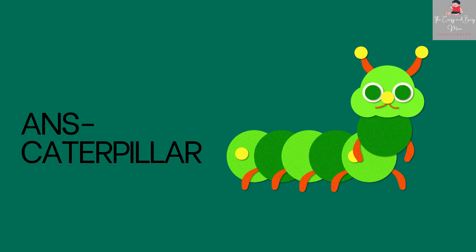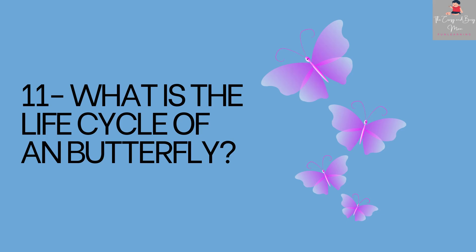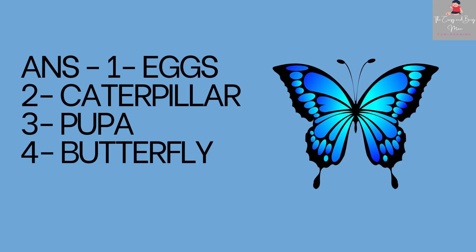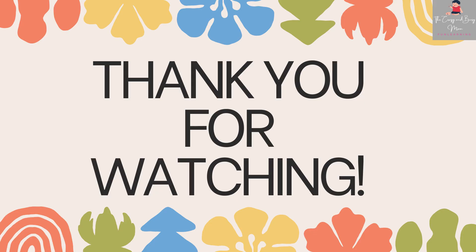What is the life cycle of a butterfly? First, eggs come, then the caterpillar or larva comes, it becomes a pupa in the third stage, and then it transforms into a butterfly in the fourth stage. So the answer is: eggs, caterpillar, pupa, butterfly. Thank you all, thank you for watching!